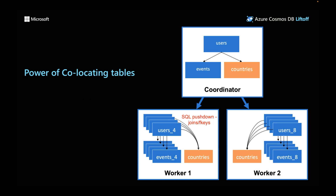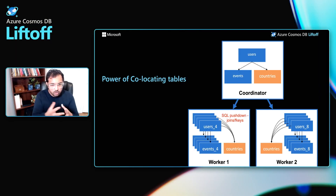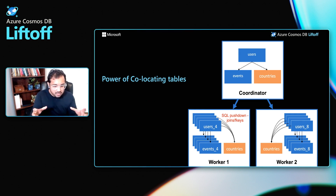I've talked about collocating tables — what does this actually mean and how does it help? Distributing users and events on the same column — user ID — makes them collocated, ensuring that data for the same users from both tables resides on the same node. This helps optimally perform SQL operations like joins and foreign keys in a distributed environment. A join between users and events can be pushed down directly to the worker nodes across shards, giving great performance. Since countries is replicated on all nodes, it can also join directly with the users table and that join can be pushed down too.